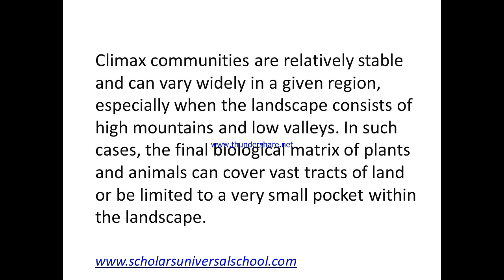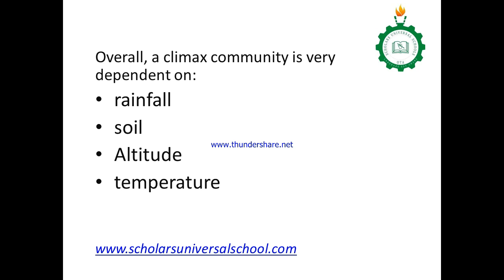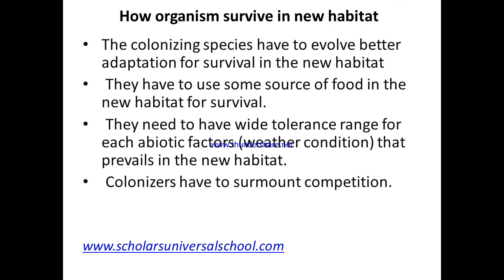The stability of a climax community varies widely, especially when the landscape consists of high mountains and low valleys. In such cases, the final biological matrix of plants and animals can cover vast tracts of land or be limited to a very small pocket within the landscape. Factors that can affect the stability of a climax community include rainfall, soil type, altitude, and temperature. As these vary, they will also affect the equilibrium of the climax community.